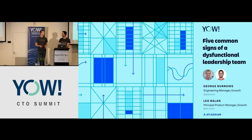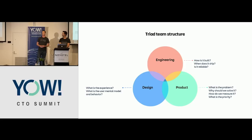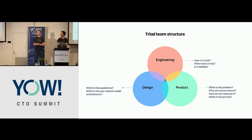In the triad team structure, there are normally three functional representatives. There's the engineering manager — that's me — responsible for delivering. There's the design lead, responsible for the user experience. And there's a product manager, responsible for the customer or the business needs. But this team is responsible for delivering the magic — delivering awesome features that our users love that are shipped on time.